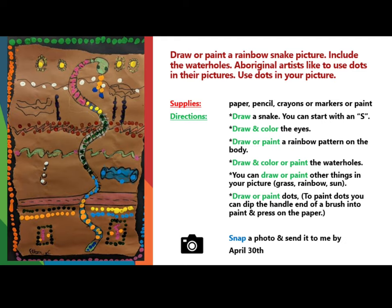You can add grass, a rainbow, or a sun. Draw or paint dots. To paint dots, you can dip the handle of a paintbrush into paint and press it on the paper.